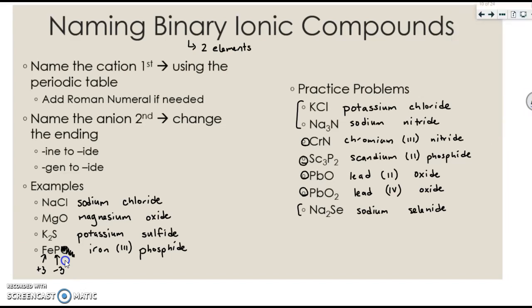Let's discuss this. So nitrogen has a negative 3 charge. Therefore, to counter that, chromium has to be positive 3, which is why it's chromium (III).